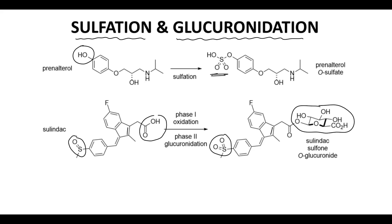That SO to SO2 oxidation is actually a Phase I step, so both of these reactions occur on sulindac. Note that both products carry very polar groups: the sulfate would be deprotonated, and the glucuronide — with its carboxylic acid — would also be deprotonated. Attaching these really polar groups to the molecule helps it get excreted by the kidneys.